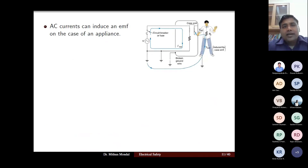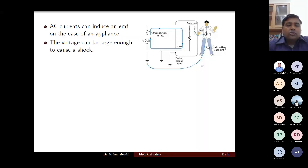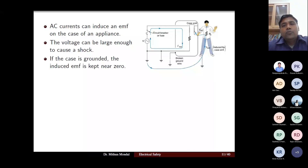AC current produces induced EMF — electromotive force — which is also dangerous and can leak to the person causing fault. With a broken ground wire, leakage current flows and the induced EMF is large enough to cause electric shock. When the case is grounded, the induced EMF is kept near zero potential. That is the main reason why we earth the outer enclosure of the device — so the induced EMF is also protected.